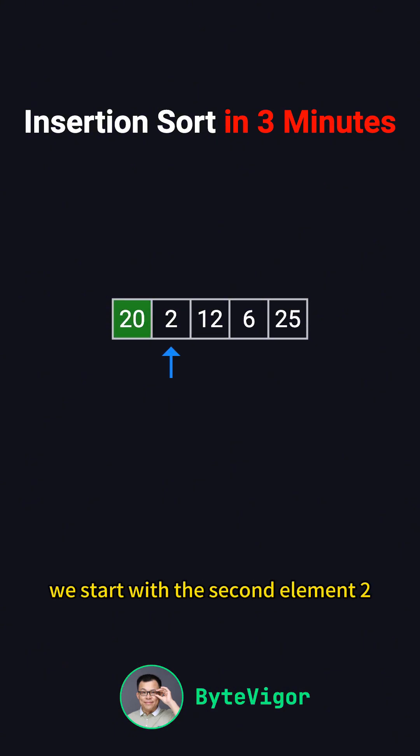We start with the second element, 2, because in Insertion Sort, the first element, 20, is considered already sorted. First, we compare 2 with 20. Since 2 is smaller than 20, we shift 20 one position to the right and place 2 in front of it. The array now looks like 2, 20, 12, 6, 25.